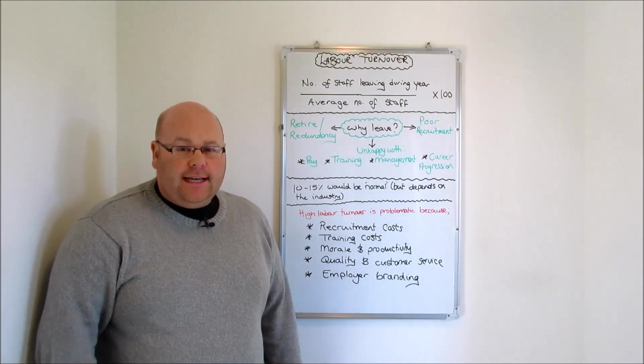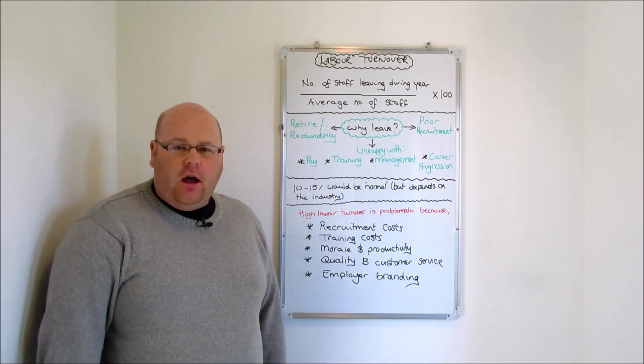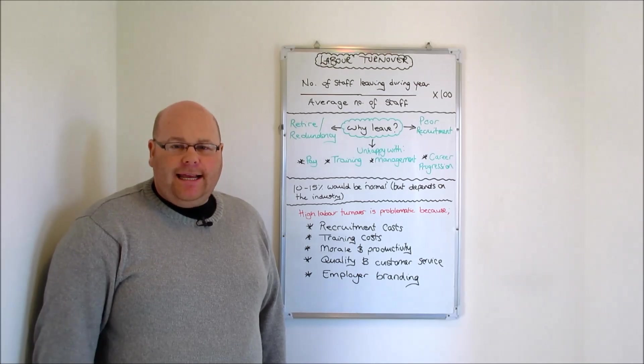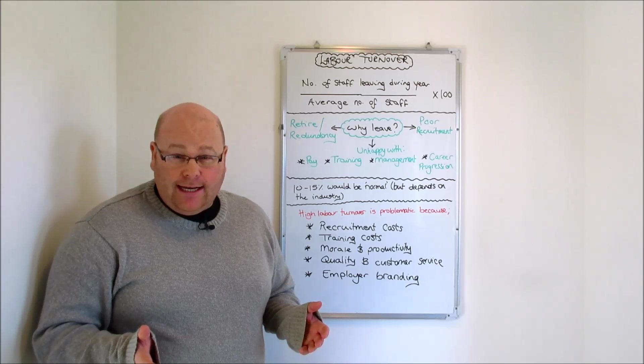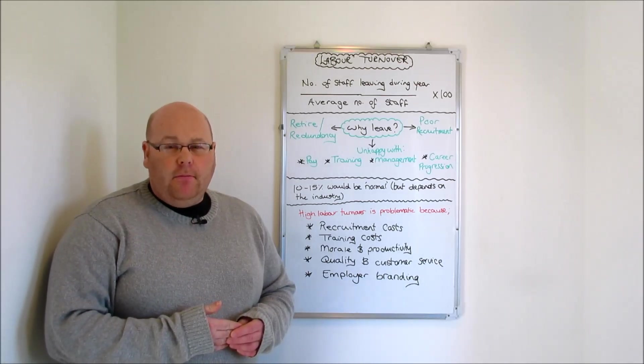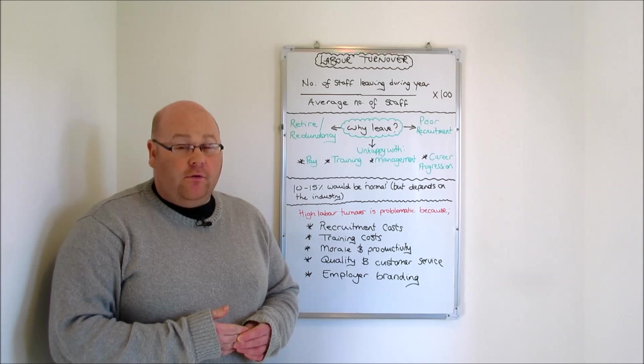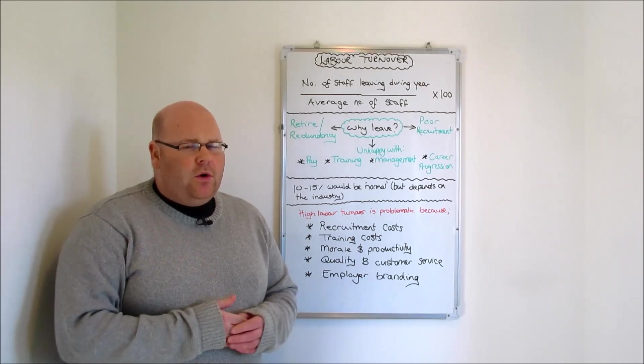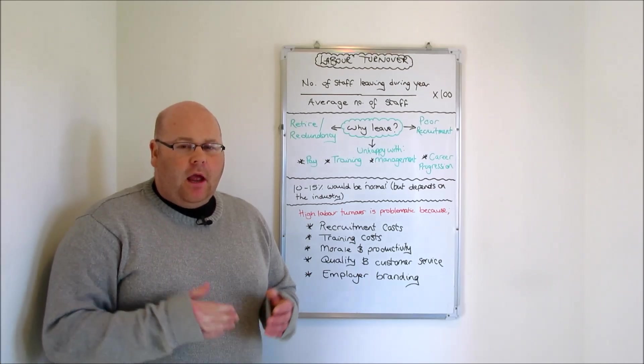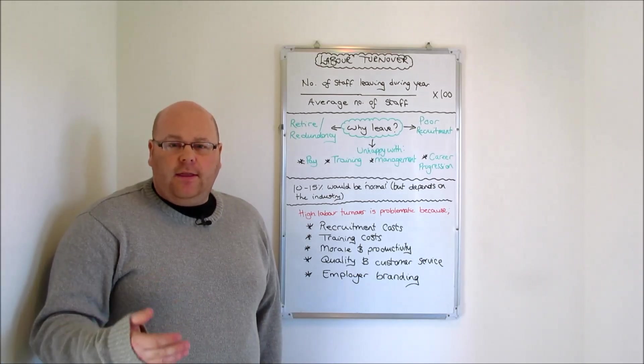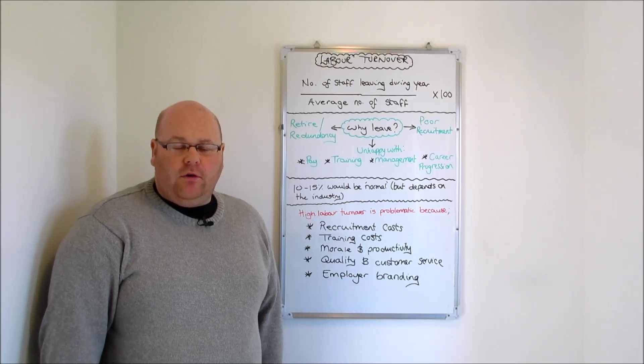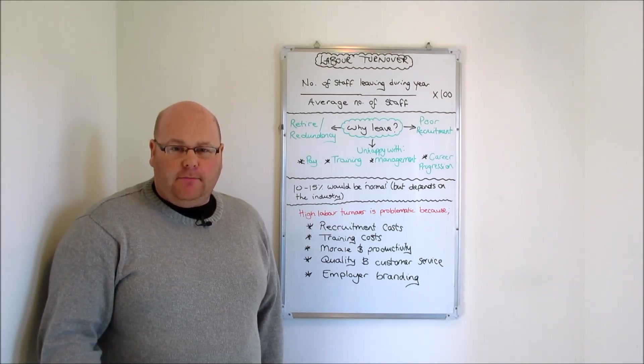In this tutorial we're going to take a look at an HR measurement known as the labour turnover percentage. It's quite simple to calculate. All we need to do is take the number of employees that leave an organisation over a time period, normally a year, and divide that figure by the average number of staff the business may have working for it during that same time period.